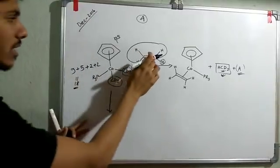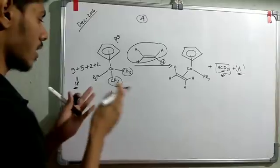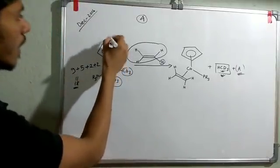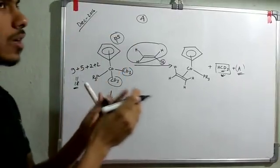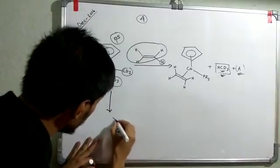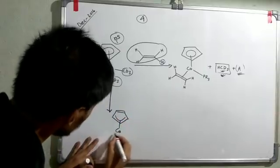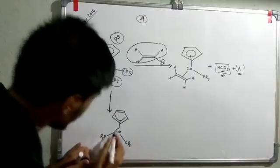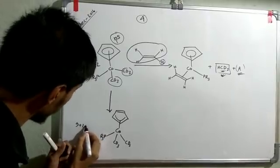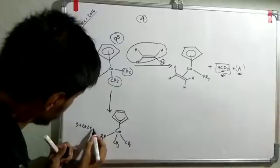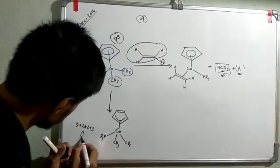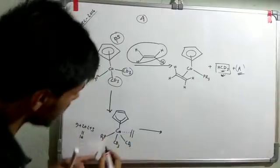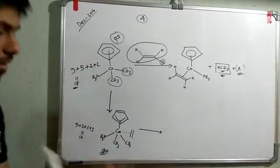If it is already an 18-electron complex it cannot accommodate another ligand. So it has to first do something - in some way it has to attain less than 18 electrons. It can do this by flipping this eta, showing haptotropic behavior. It can go to eta-3 mode, and you can see if it goes to eta-3 mode you will have 16 electrons. Now it can accommodate this alkene.